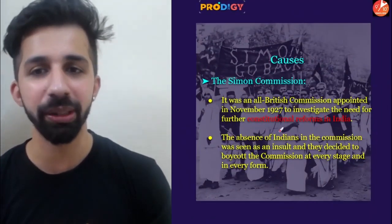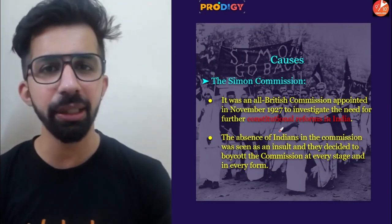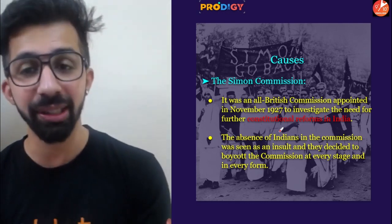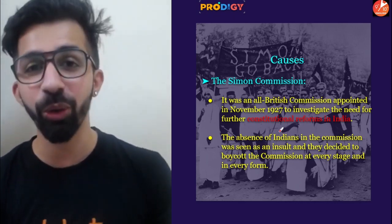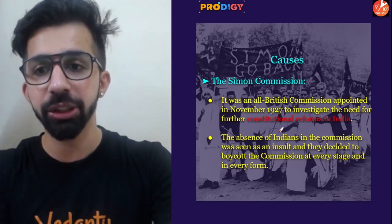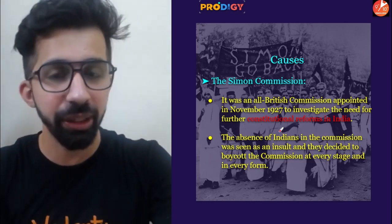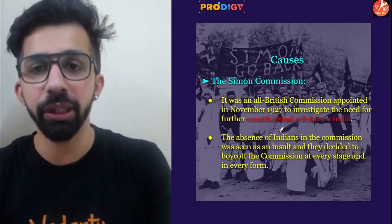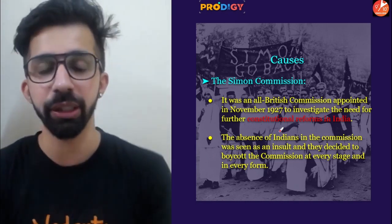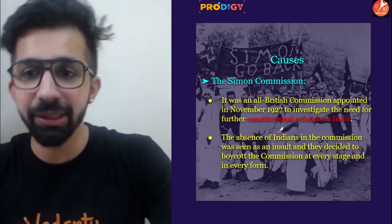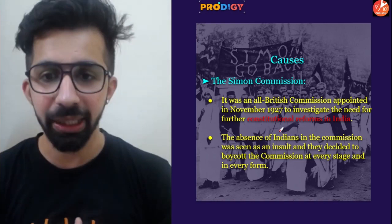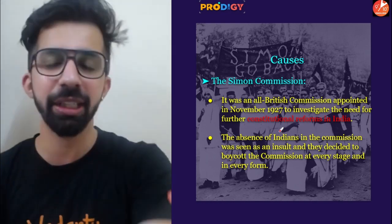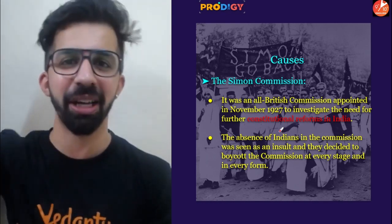One of the causes of the Civil Disobedience Movement was the Simon Commission. It was an all-British commission appointed in November 1927 for constitutional reforms in India, but there was no Indian in this body. The absence of Indians in this commission was seen as an insult. We decided to boycott this commission at every stage, protesting with slogans like 'Go Back Simon.'